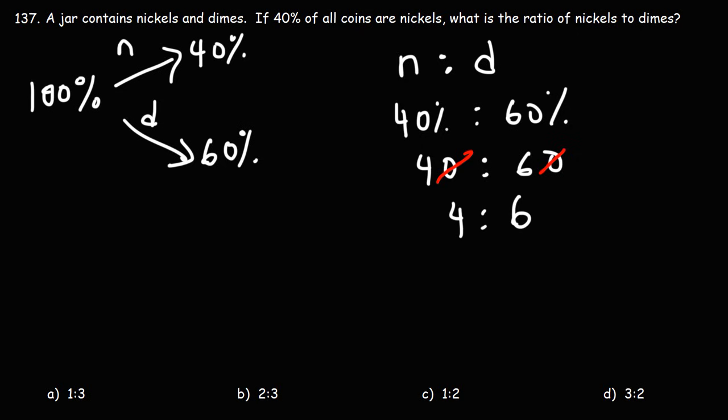Both of these numbers are even, so we can divide them by 2. 4 divided by 2 is 2. 6 divided by 2 is 3.